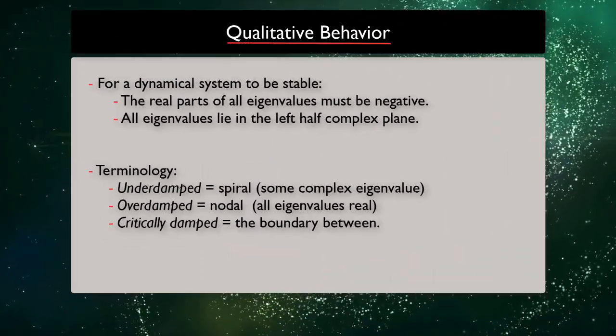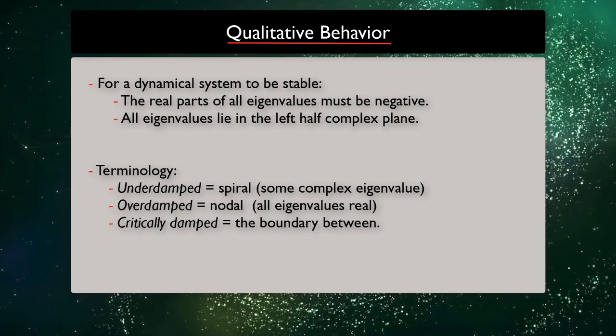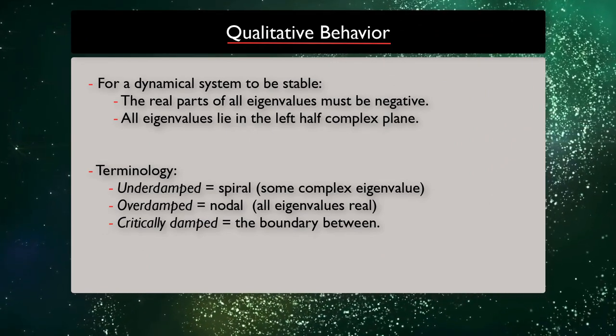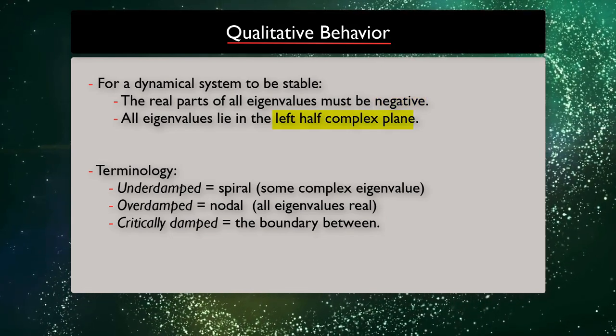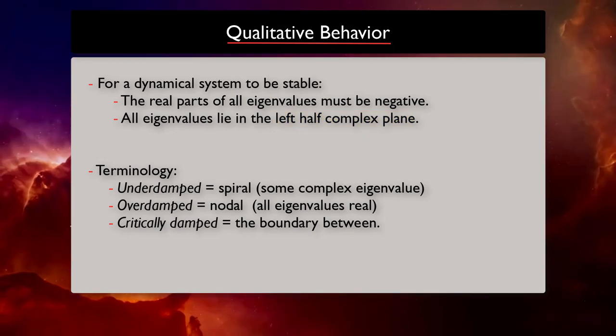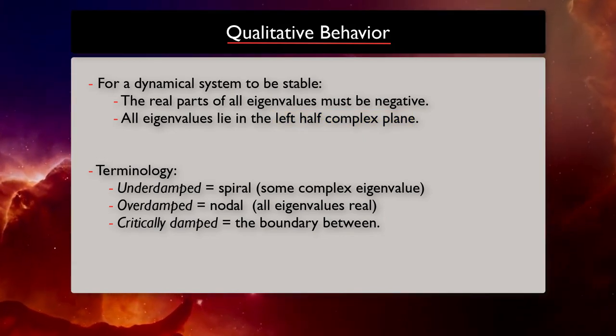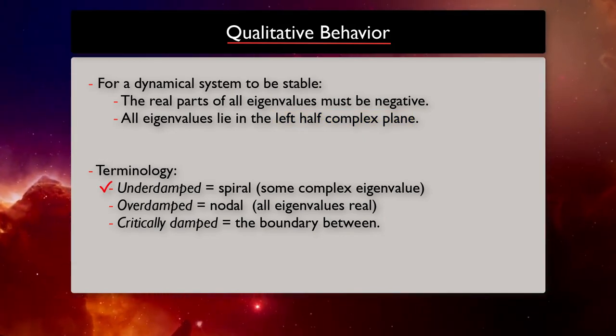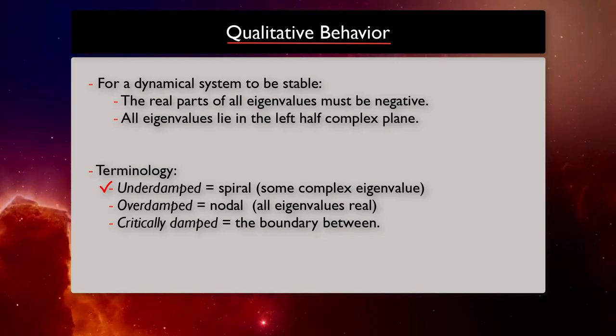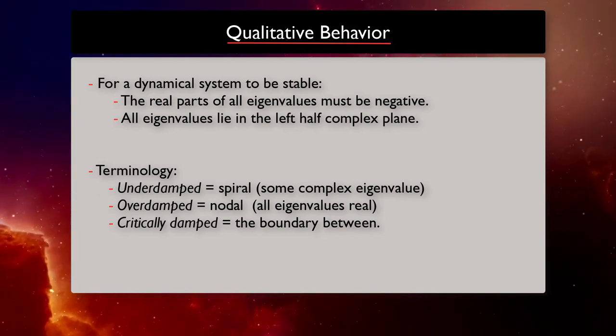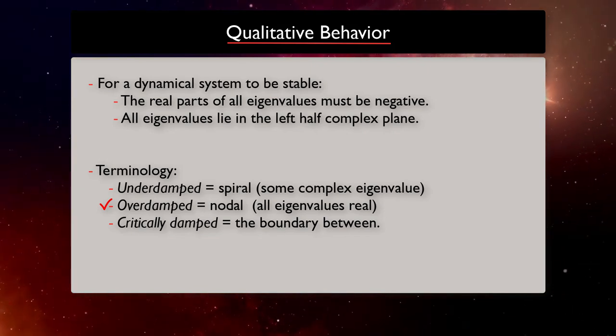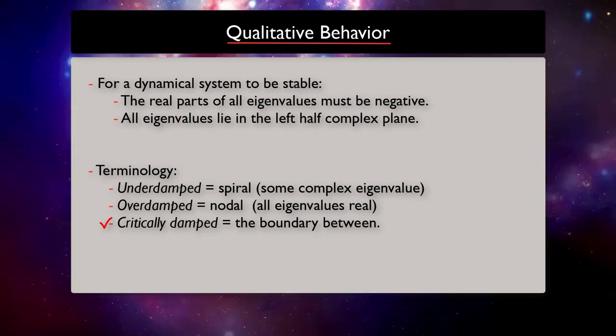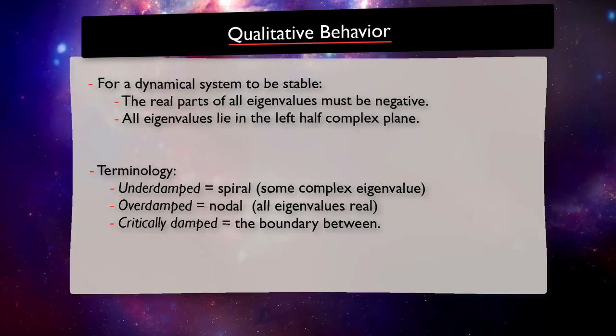For a dynamical system to be stable, we saw that the real parts of all eigenvalues must be negative. All eigenvalues lie in the left half of the complex plane. We say a dynamical system is underdamped if there is a complex eigenvalue, and we say it is overdamped if all eigenvalues are real, and critically damped at the boundary between them.